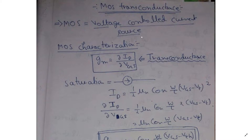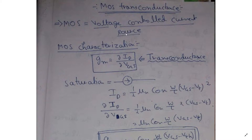Why? Just take the formula for saturation region: ID = (1/2) · μn · Cox · (W/L) · (VGS − VT)². So ID is dependent on VGS. Similarly, if you consider the expression for the linear region, there also you can observe that drain current is dependent on VGS — the gate-to-source potential — as well as VDS, the drain-to-source potential. So basically MOSFET produces current from voltage, and that is why we say MOSFET is a voltage-controlled current source.